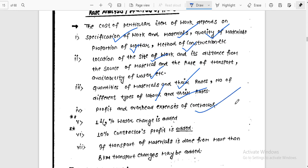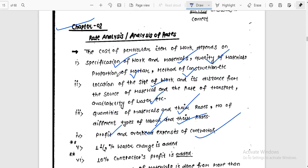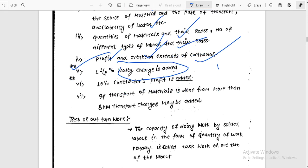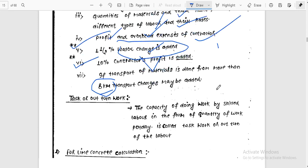Next, profit and overhead expenses of contractor. These are important factors. If actual data is not available, 1.5% water source is added. Also, 10% contractor's profit is added. And if transport of materials is done from more than 8 km, transport charges should be added.